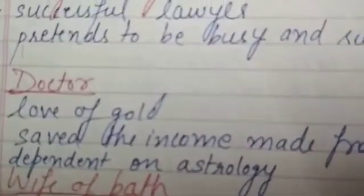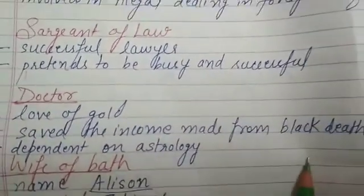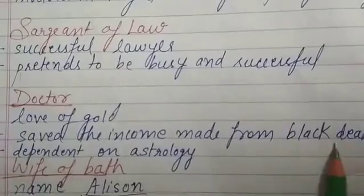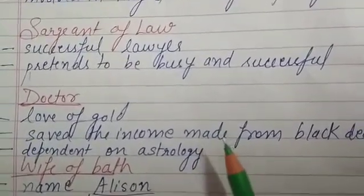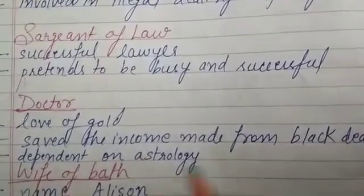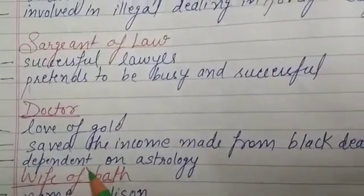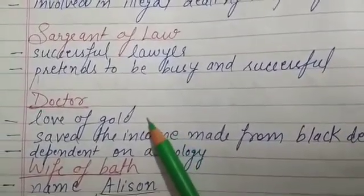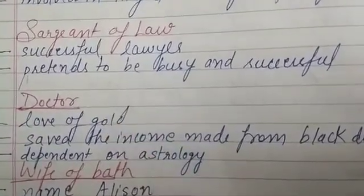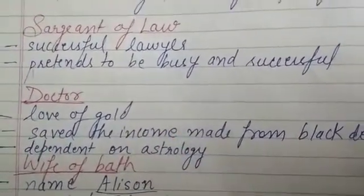The Doctor is a very important character. He had a great love for gold and saved all the income he made from patients during the Black Death. He was also heavily dependent on astrology. Questions can be asked: who loved gold — the Doctor; who was dependent on astrology — again the Doctor.